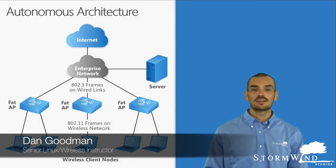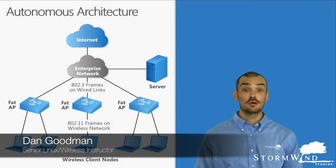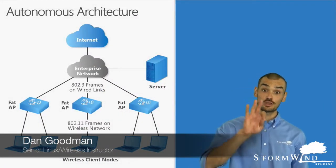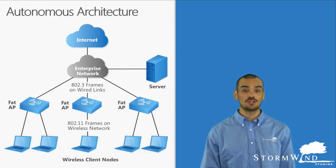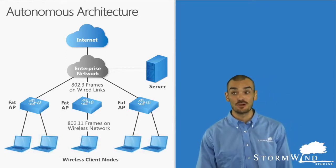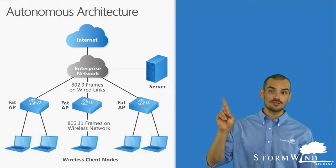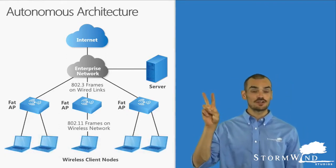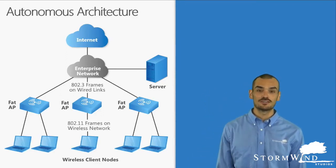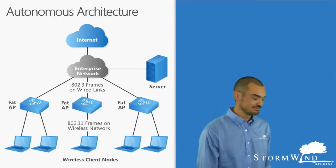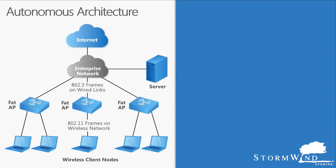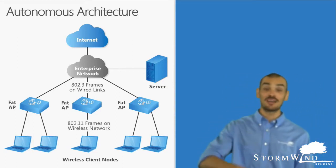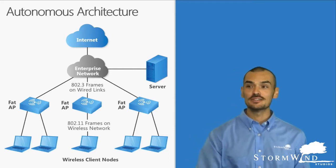Hey folks, we just wanted to take a couple of minutes to go ahead and discuss the three ways you have of managing your access points: the autonomous architecture, the cloud-based architecture, and the split MAC architecture. No, I'm just kidding — of course, we're going to talk about the three methods and their implications.